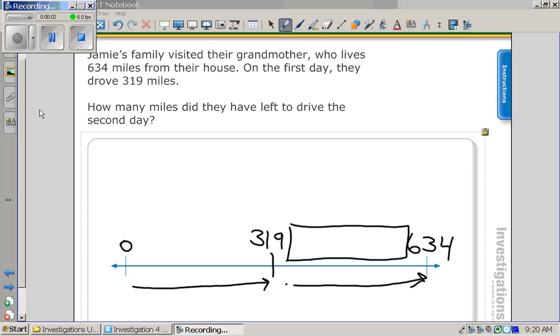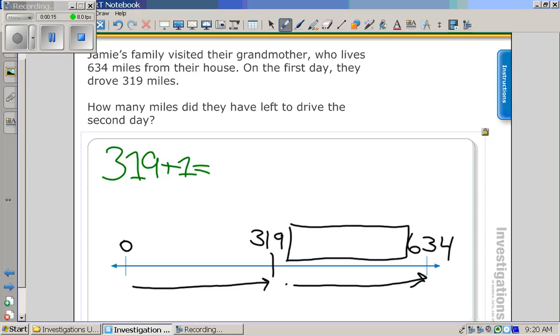319 plus 1 equals 320. Now why'd you do plus 1 to start? So what are you trying to get in the ones column?